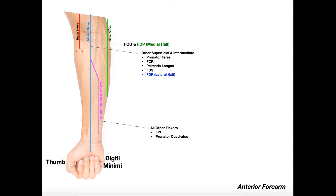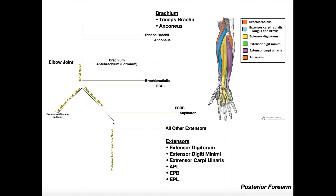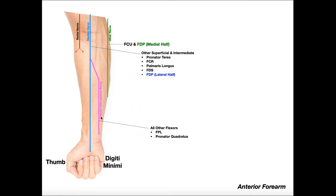In the anterior forearm, everything is either ulnar or median nerve. On the ulnar side — the medial side — we have the ulnar nerve in green. Running roughly down the middle, we have the median nerve, which goes all the way down the forearm and into the hand. At some point the median nerve gives off a branch called the anterior interosseous nerve. Don't confuse this with the posterior interosseous nerve — that came from the deep radial nerve. The posterior one is radial in origin; the anterior version is median nerve in origin.